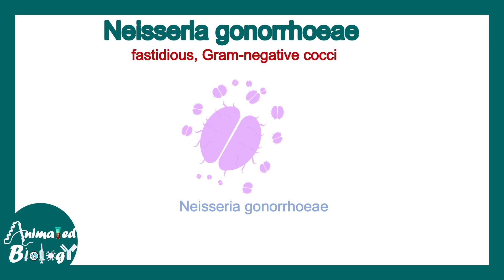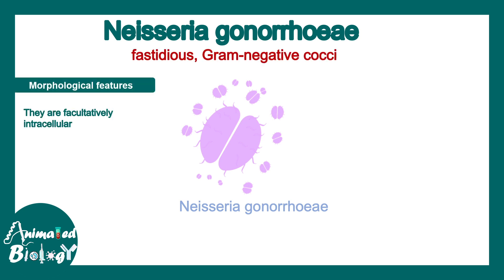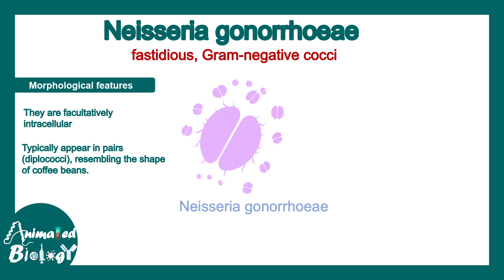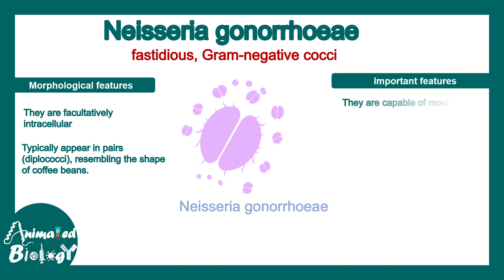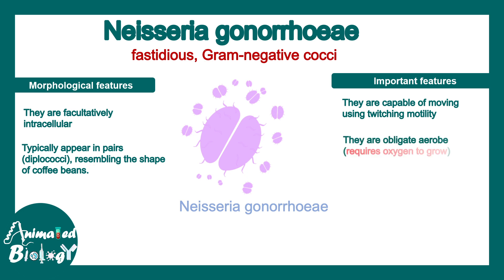N. gonorrhea is fastidious and gram-negative. They are facultatively intracellular — they cannot live outside the cell; they grow and multiply inside the cell. Typically, they appear in pairs, so they are generally diplococci. They are also capable of moving very fast with a twitching kind of motility. They are obligate aerobes, meaning they require oxygen in order to grow.